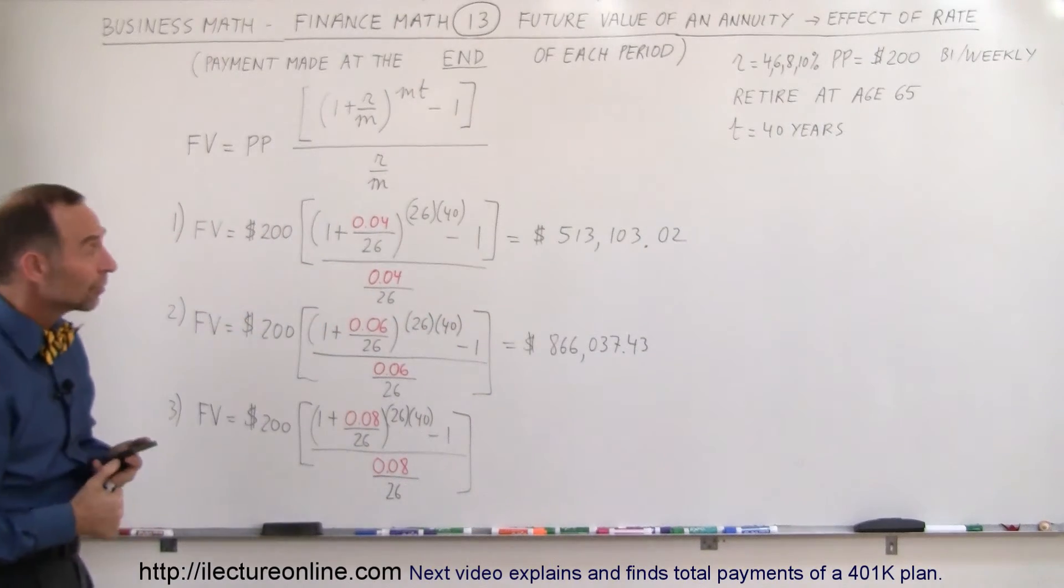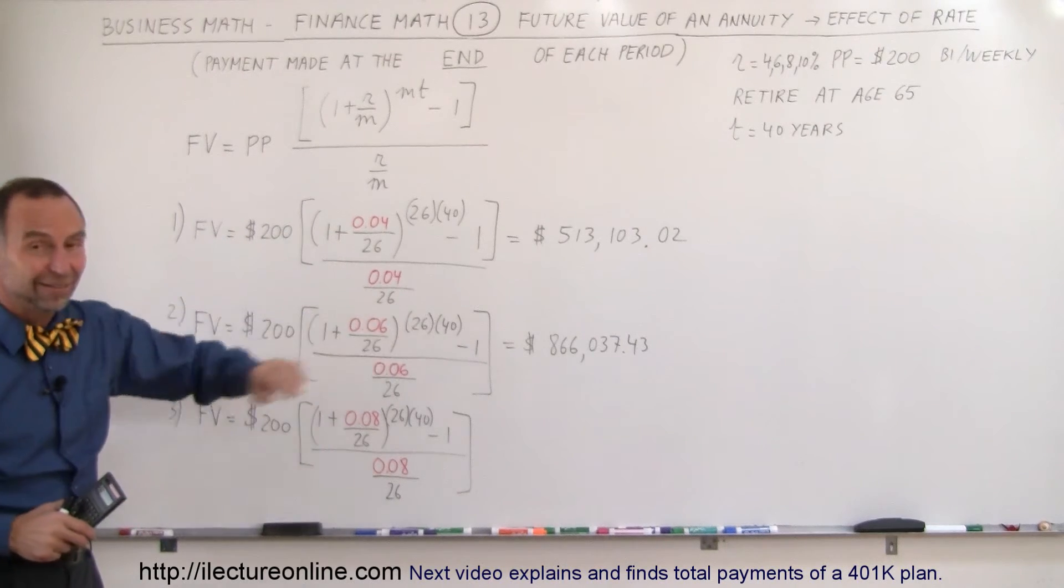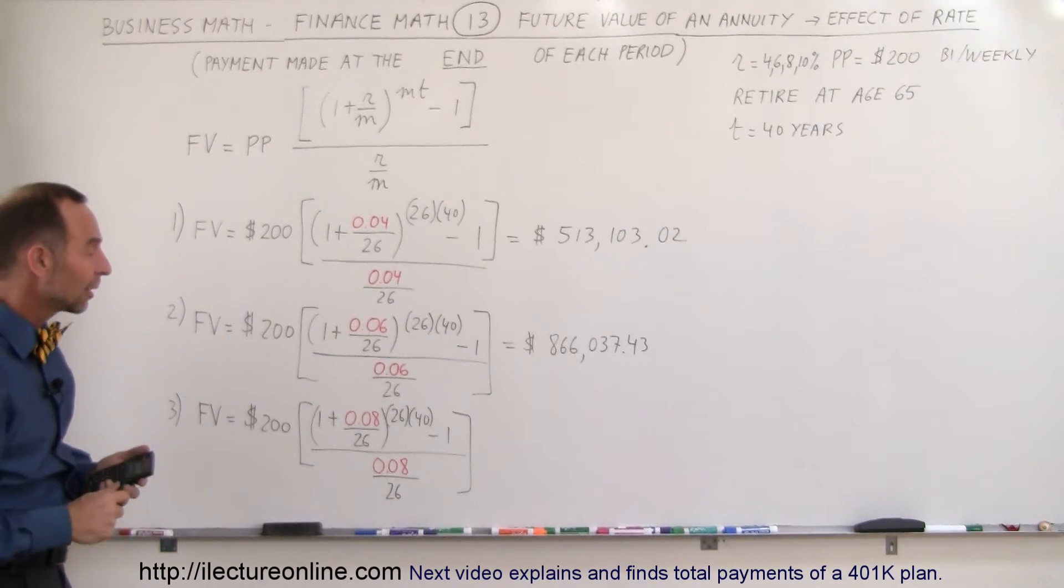Wow, quite an improvement. Not quite more than double, but going from 4% to 6% is a significant increase in the amount of money in the bank you would have.